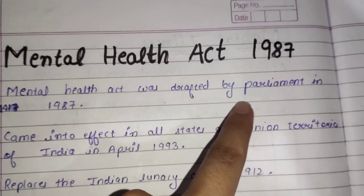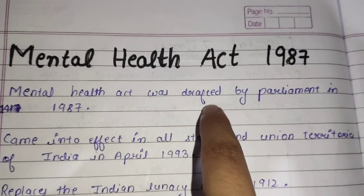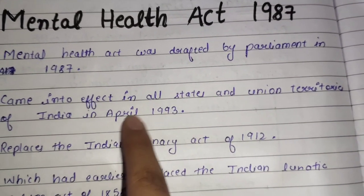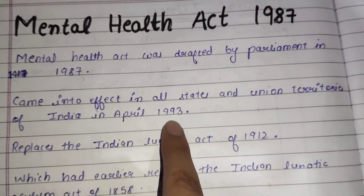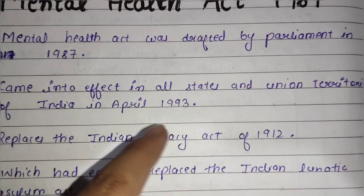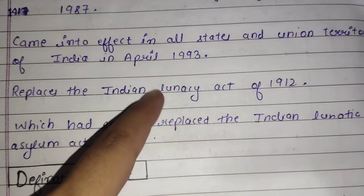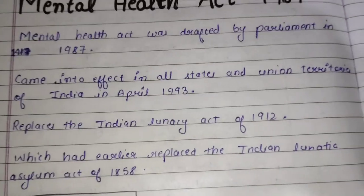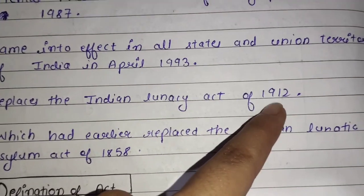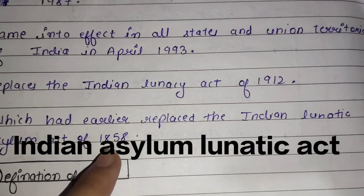The Mental Health Act was drafted by Parliament in 1987 and came into effect in all states and union territories of India in April 1993. It replaces the Indian Lunacy Act of 1912, which had earlier replaced the Indian Lunatic Asylum Act of 1858.